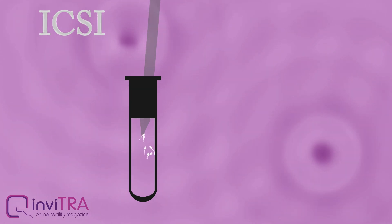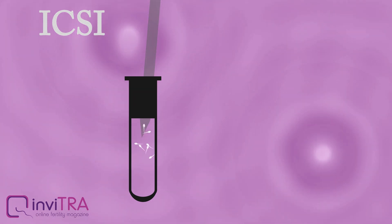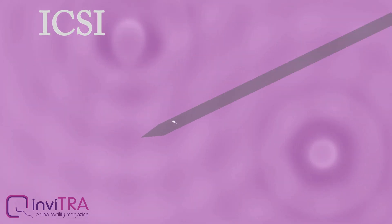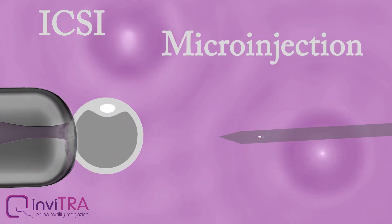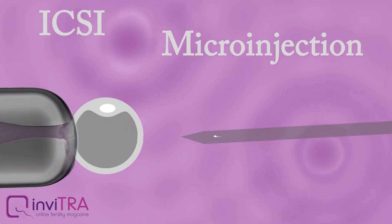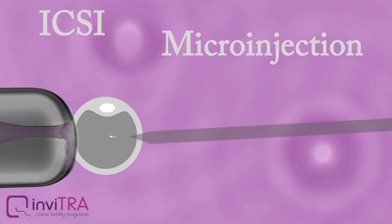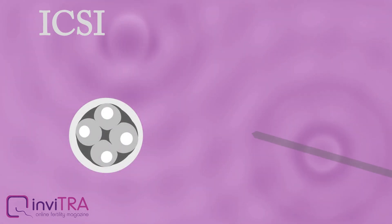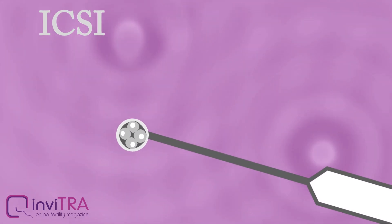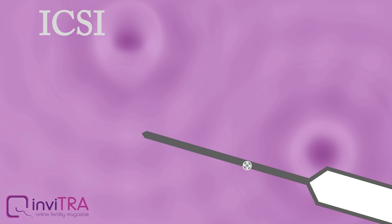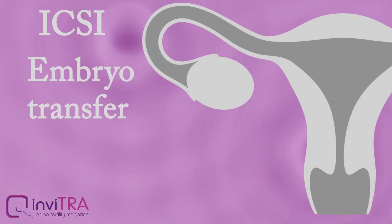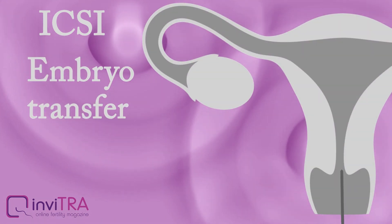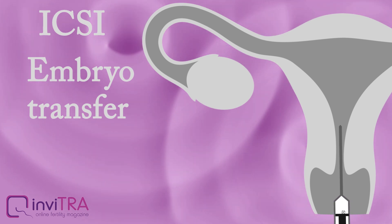Subsequently, when the semen sample is collected, the microinjection is done. The specialist selects the best sperm and introduces it into the oocyte with a micropipette. Finally, the embryo will be transferred into the woman's uterus.